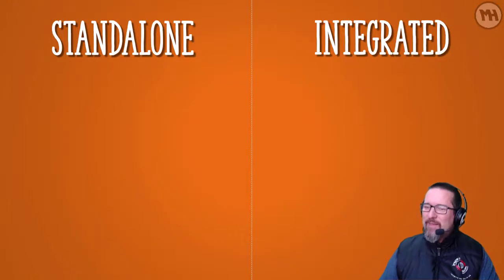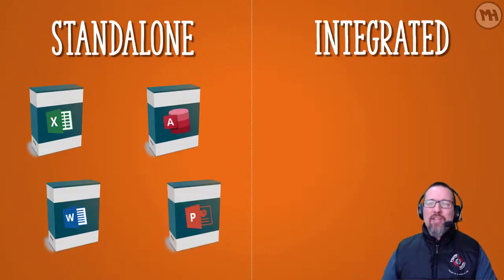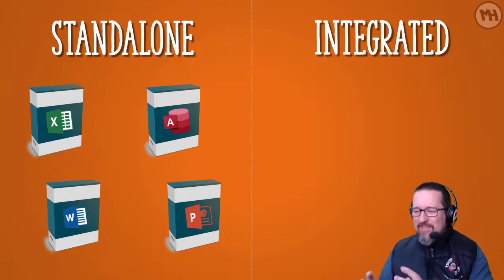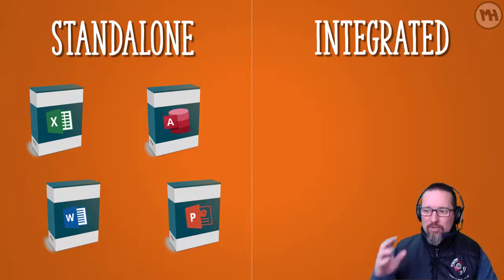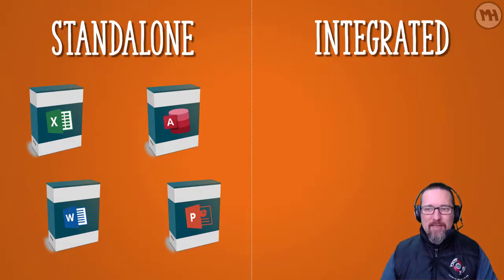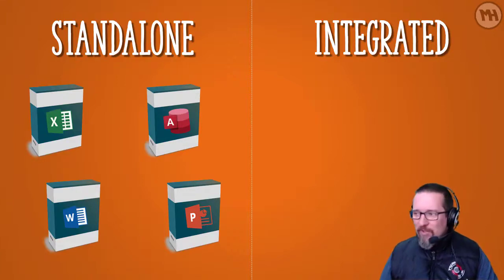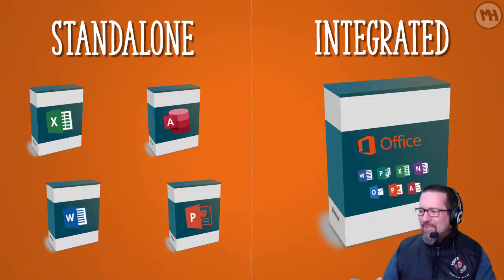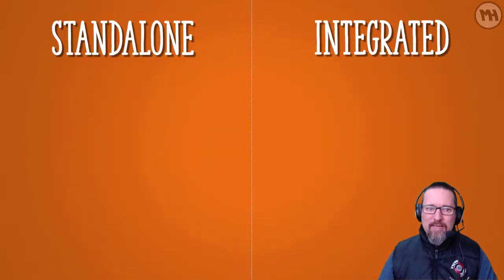Standalone software is basically when you purchase each application separately. For example, you purchase just Microsoft Excel, or just Microsoft Word, or just Microsoft PowerPoint — just the individual program. That's standalone software; it's not put together inside a suite. Integrated software, on the other hand, is one complete package, like an office suite with everything put together.